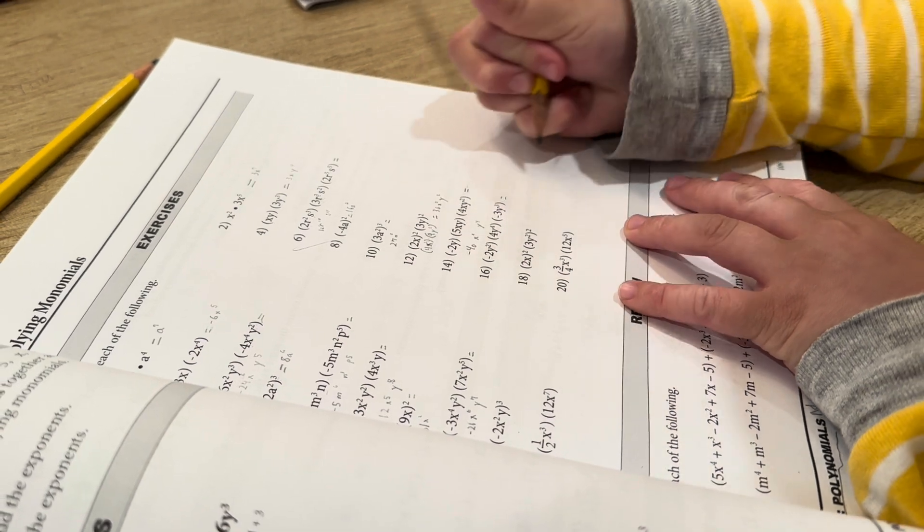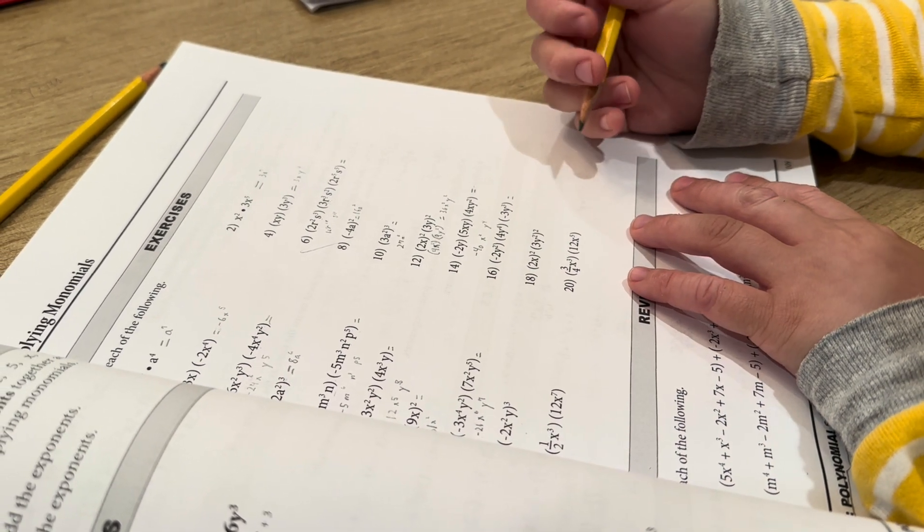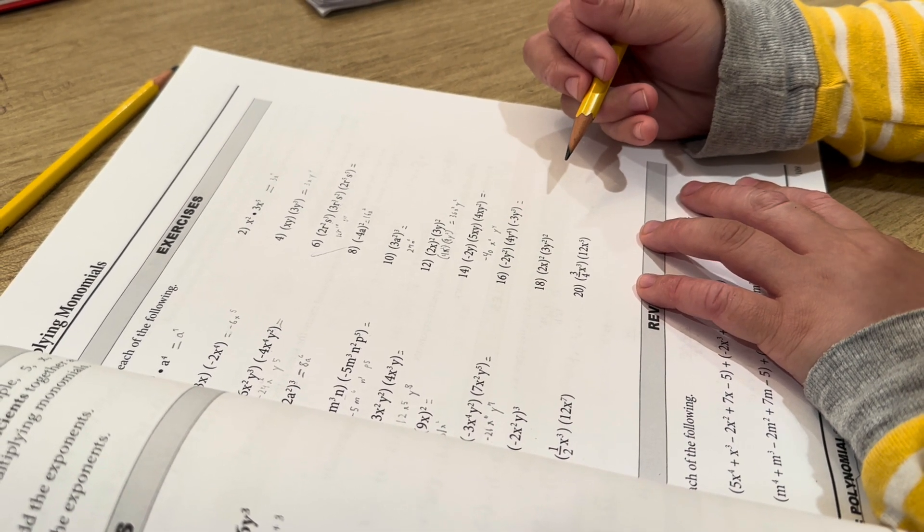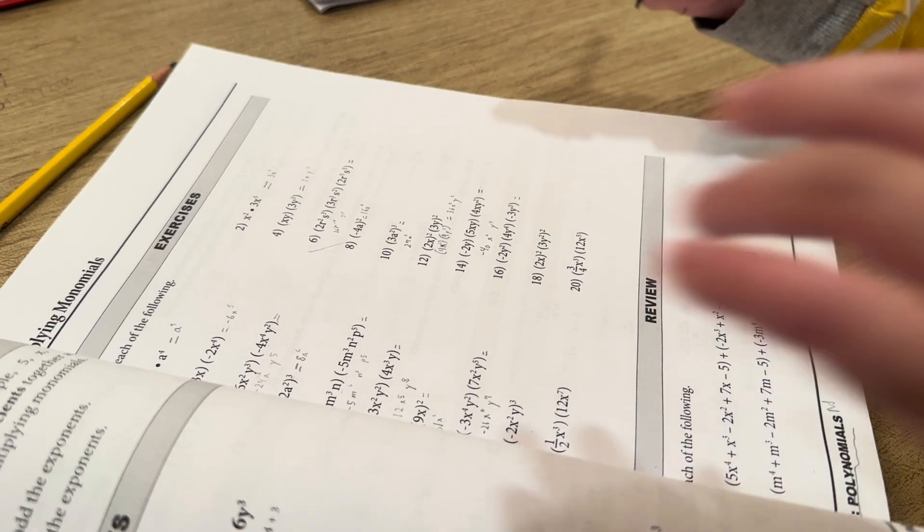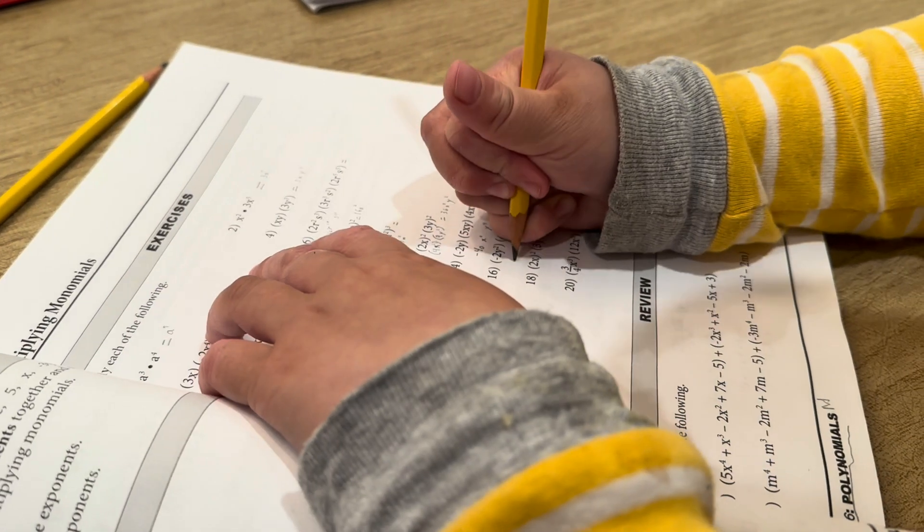Equals 24y to the ninth. Problem 16, negative 2y, 5xy, 4xy squared.